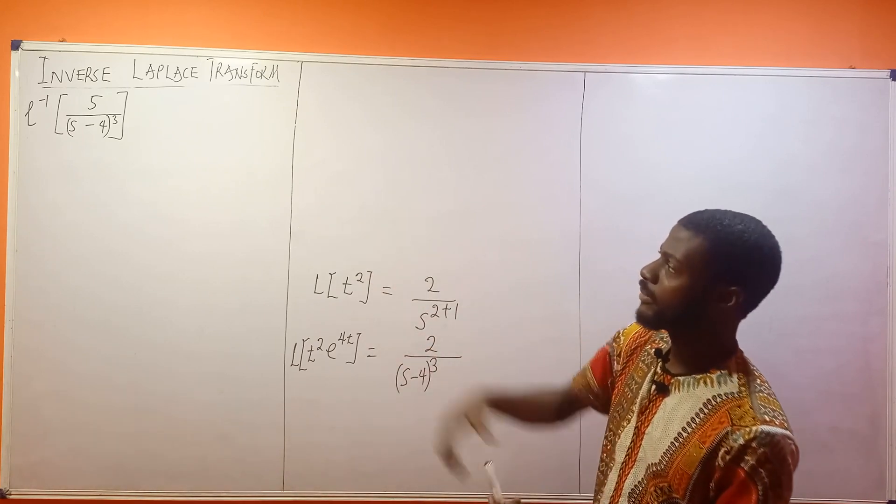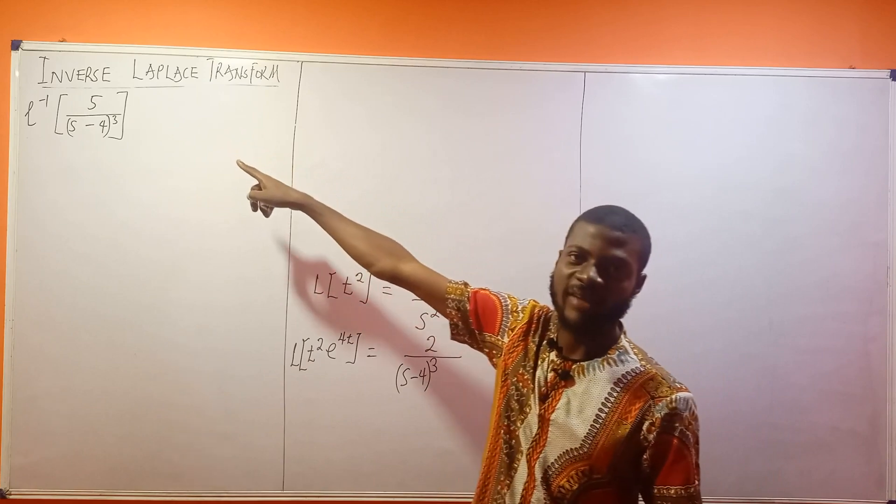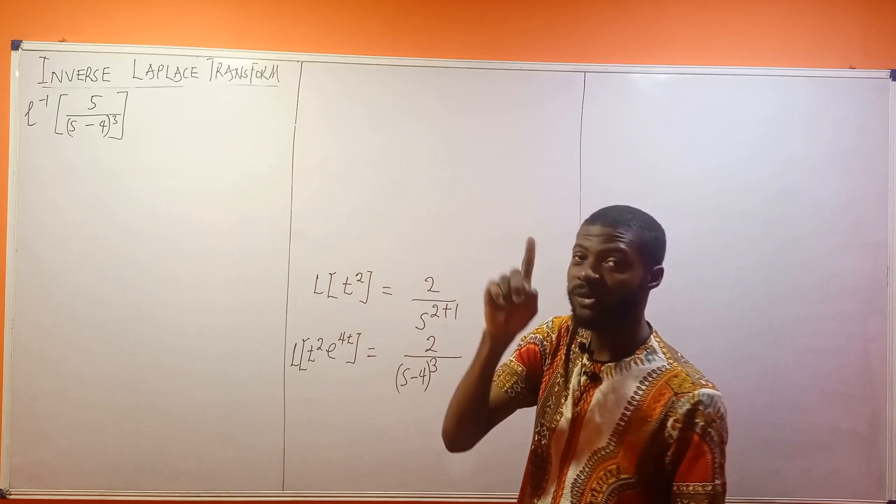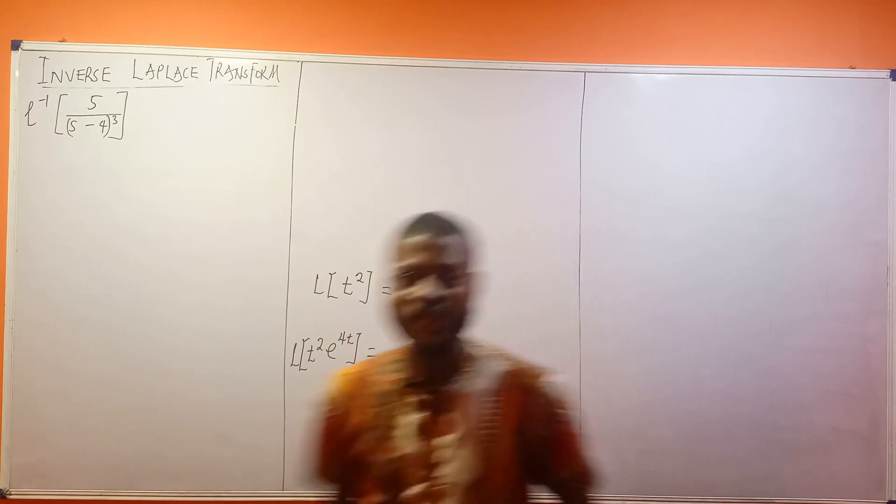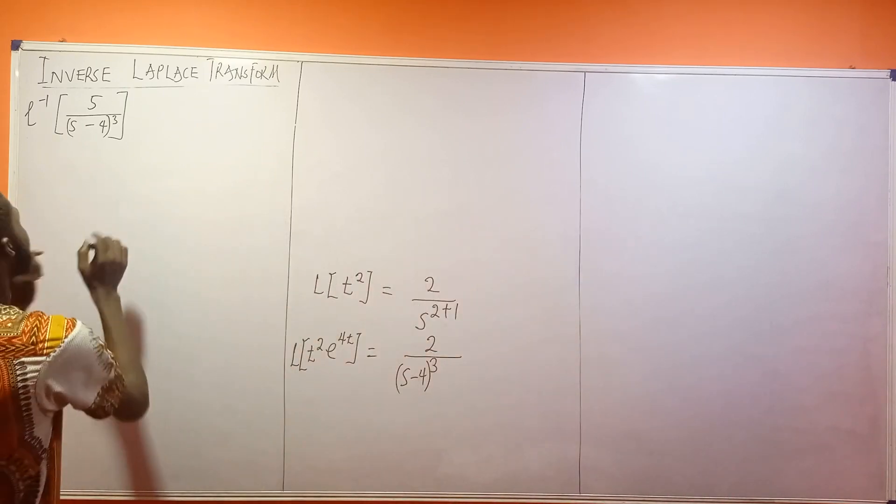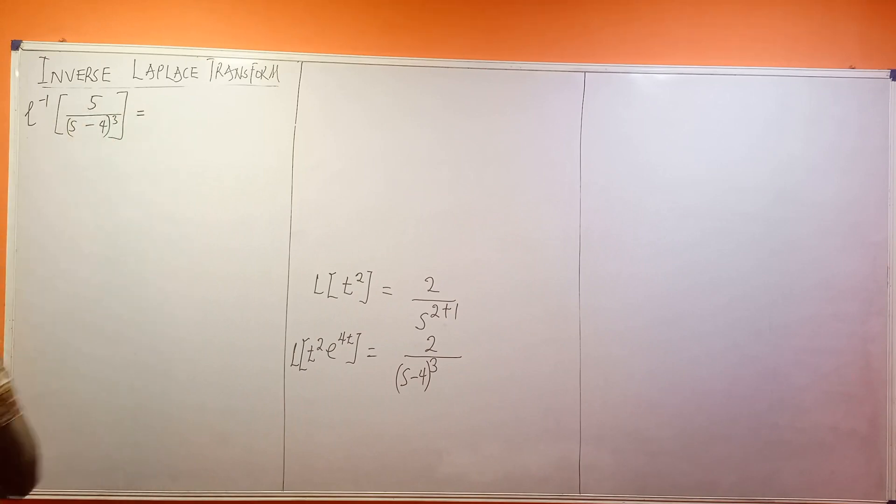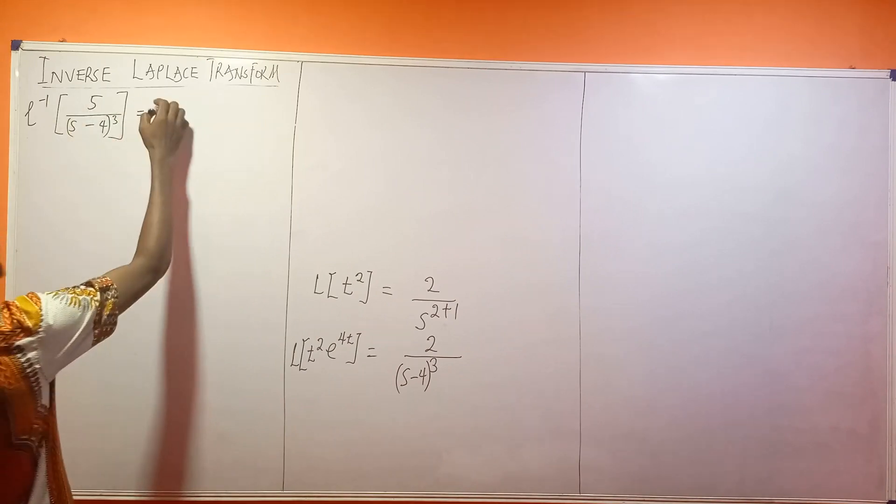Now, there's this number on top, which is 5. We're going to do something to that 5. The first thing we're going to do is this: 5 is a constant, so I want to bring out the 5. So this is 5 times...